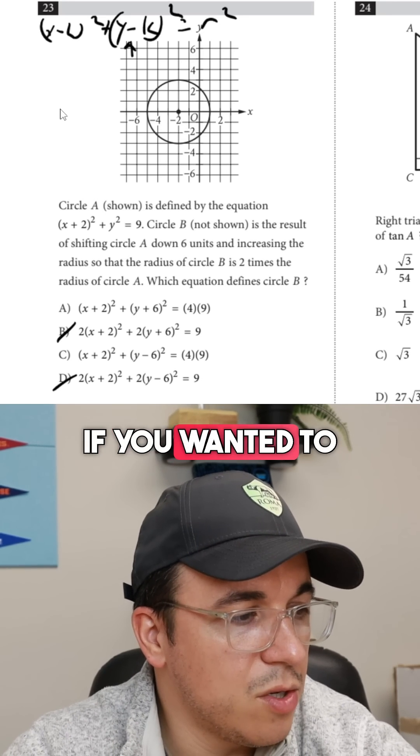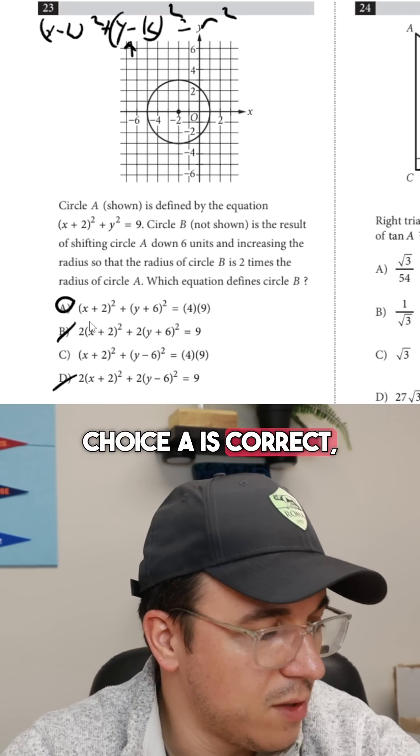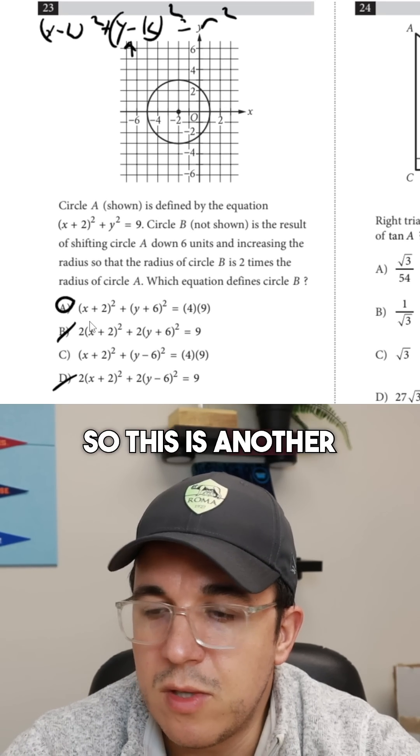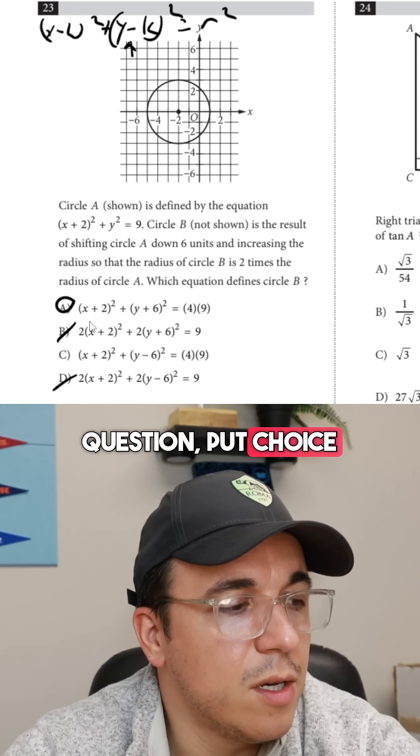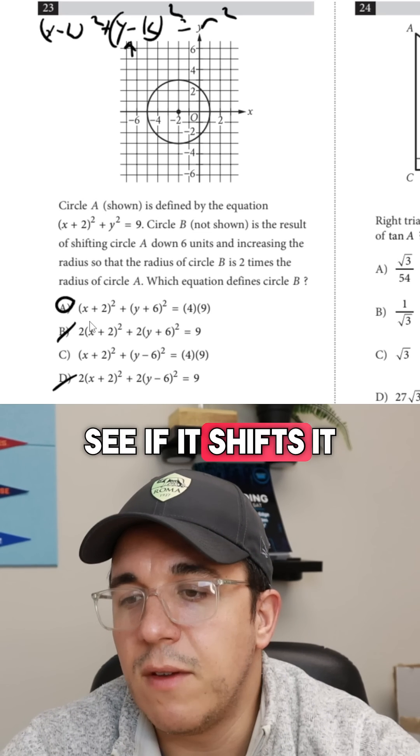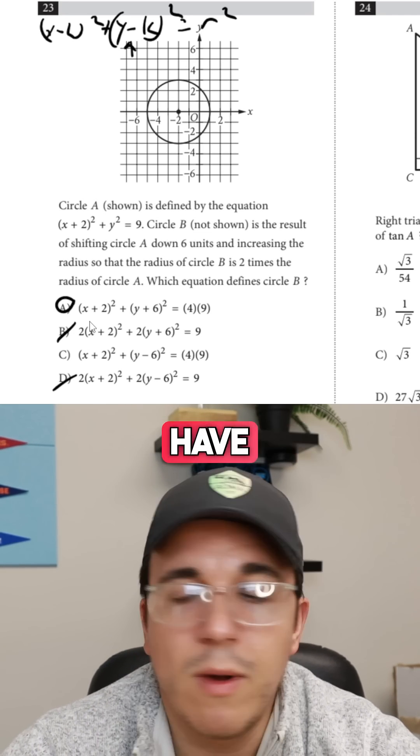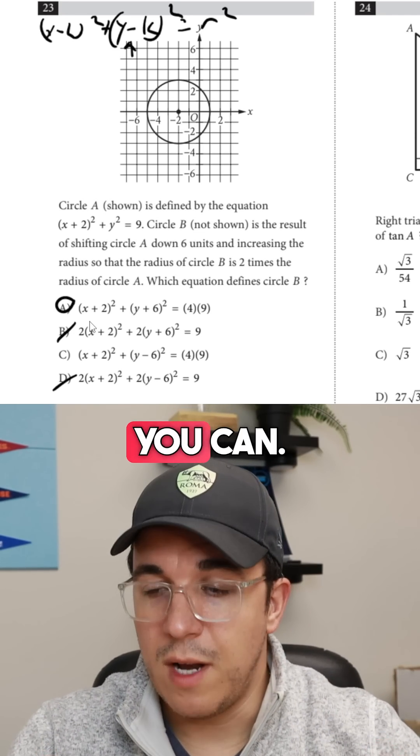So what you could do if you wanted to check that answer choice A is correct, you could actually just graph those in Desmos. So this is another great Desmos question. Put choice A into Desmos and see if it shifts it down, which it does, and then you would have the correct answer. So remember to use Desmos whenever you can.